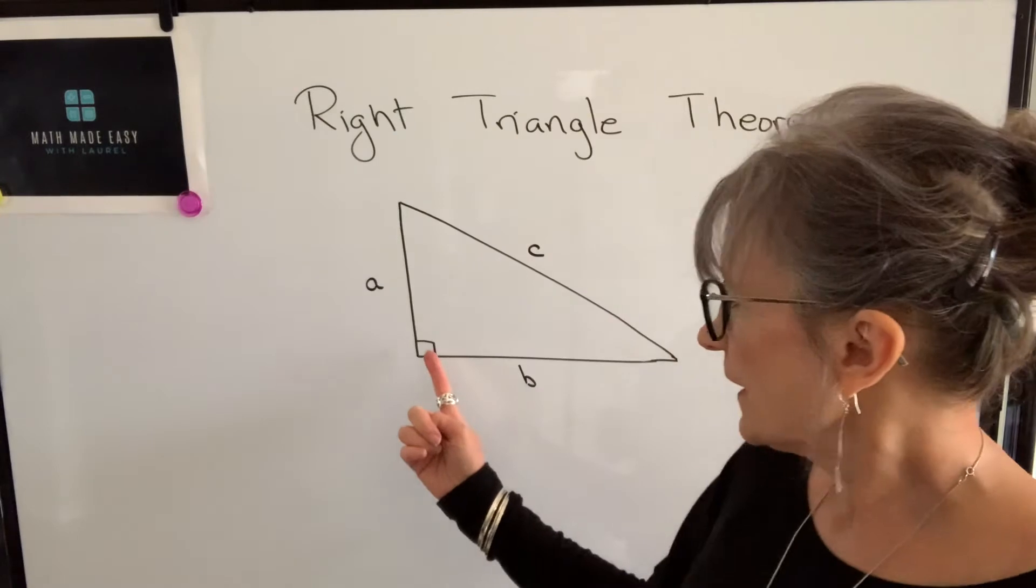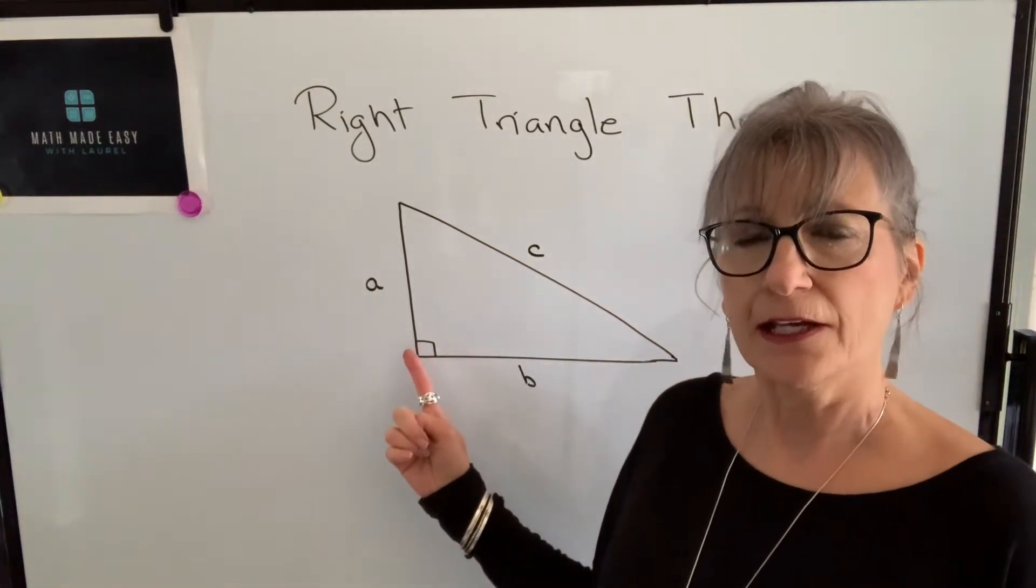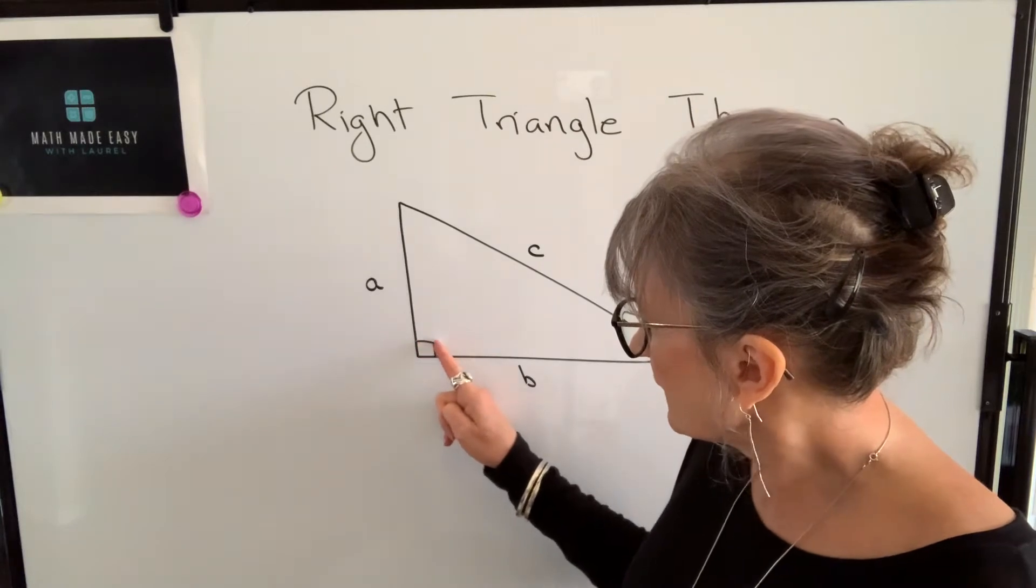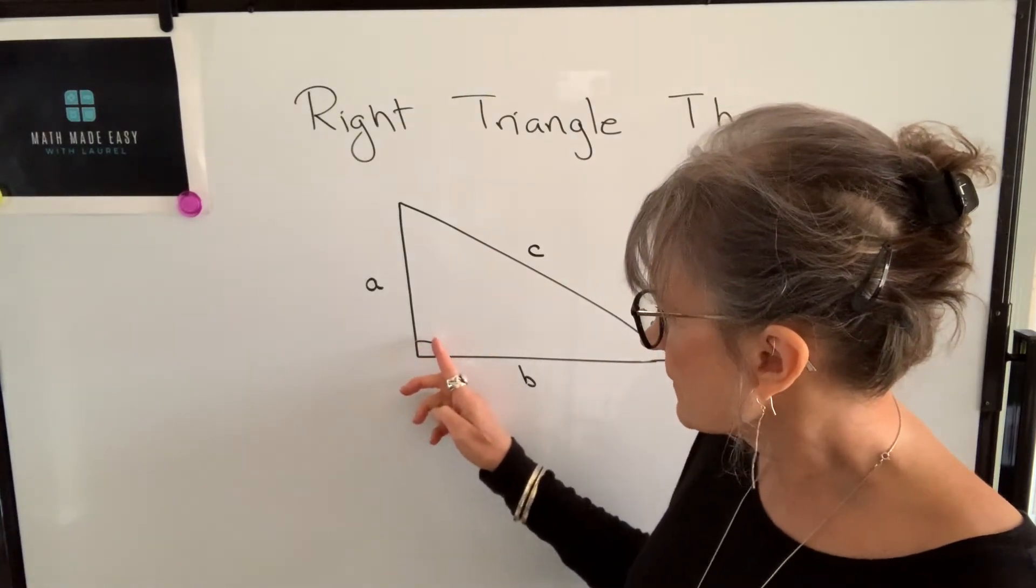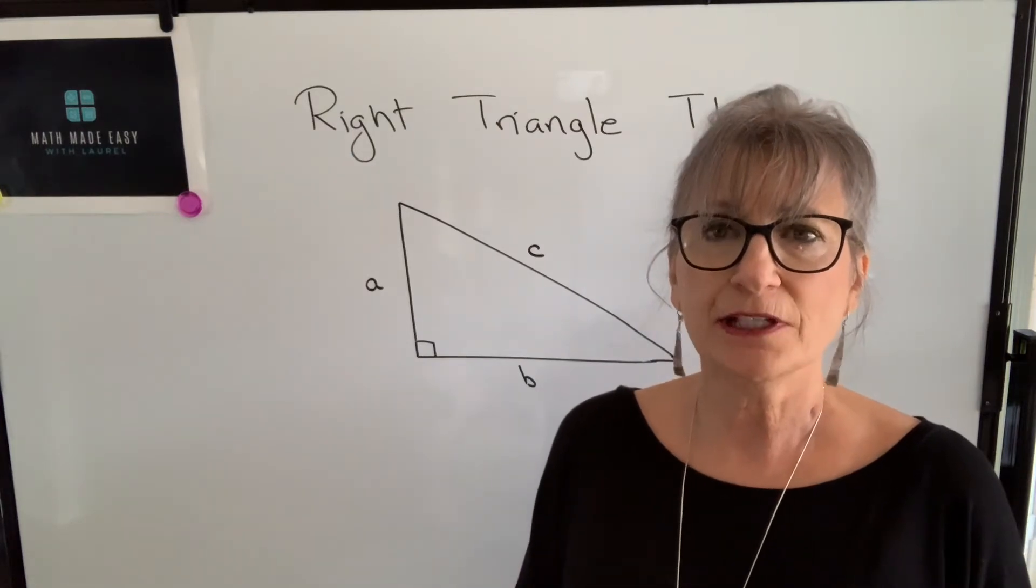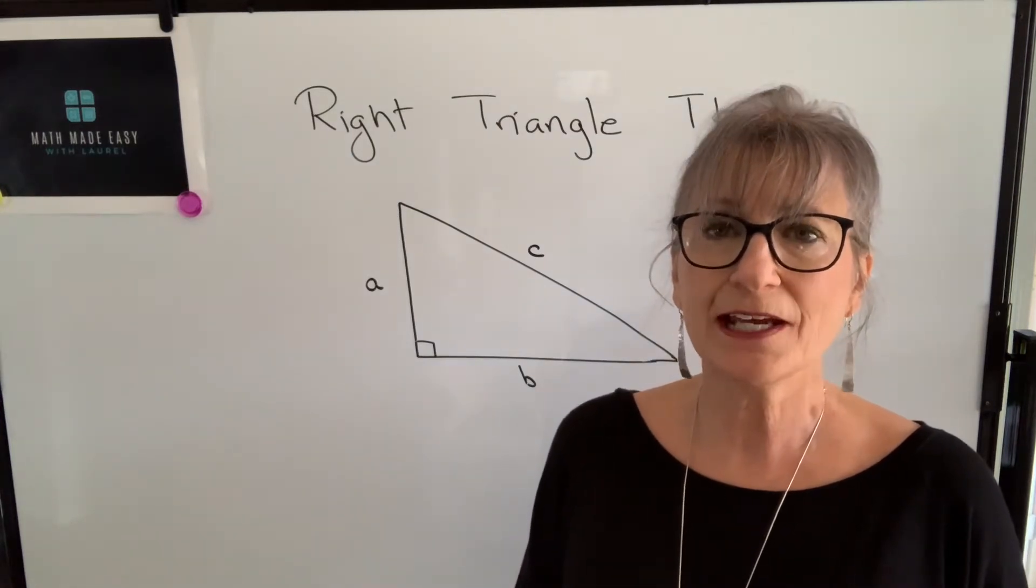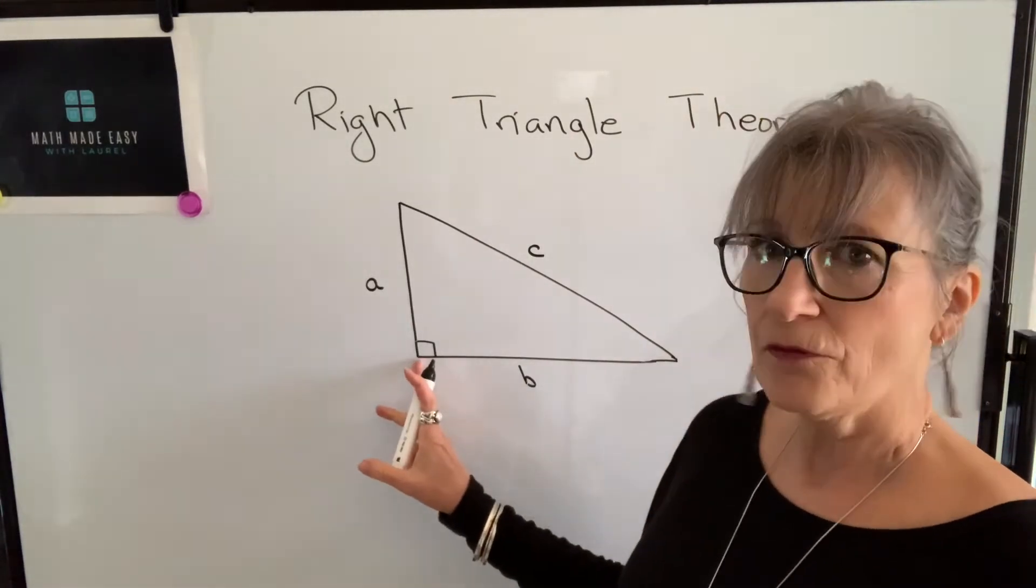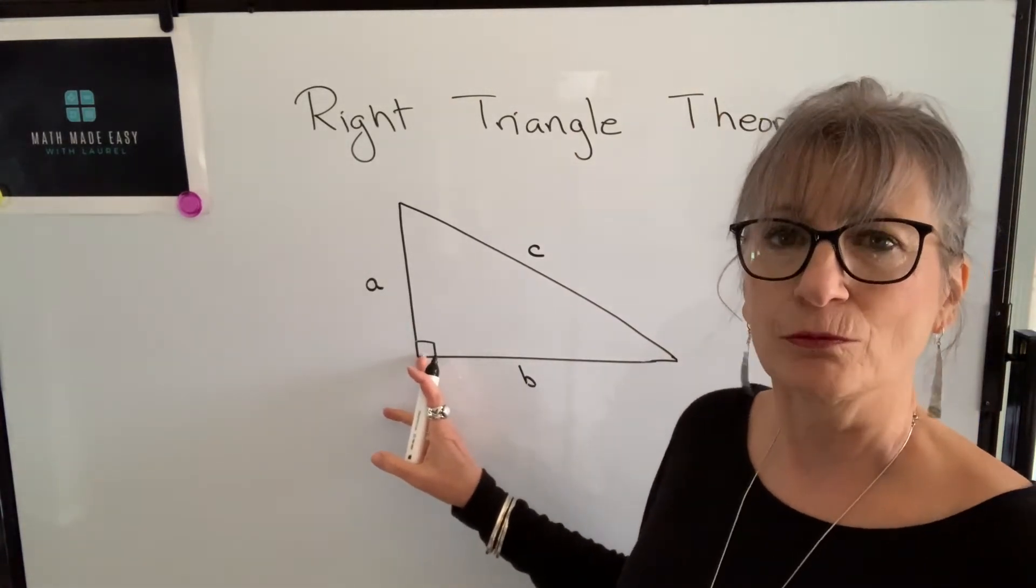Now, a right triangle is a triangle that has an angle of 90 degrees. So when you see a symbol like this at an angle, a little square, that's telling you that it's a 90 degree angle or a right angle. And if you do have a right angle in the triangle, it's called a right triangle.